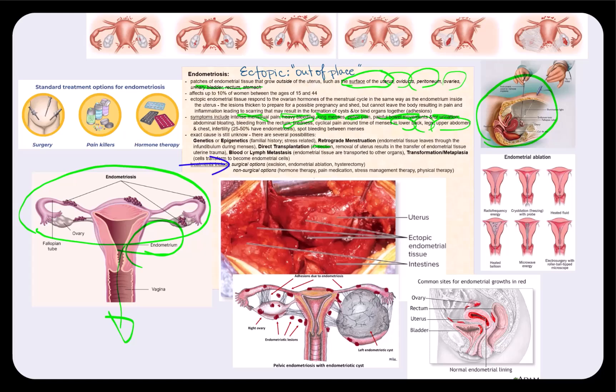Another surgical option is endometrial ablation, whereby the endometrium is destroyed. The last surgical option is hysterectomy, the removal of the uterus itself. The non-surgical options involve hormone therapy, pain medication, stress management therapy such as yoga or meditation, and even physical therapy.